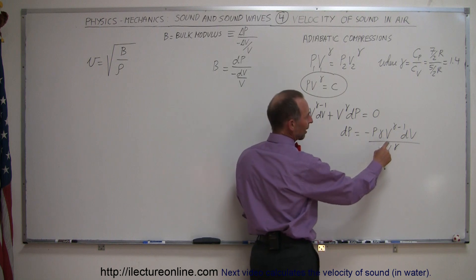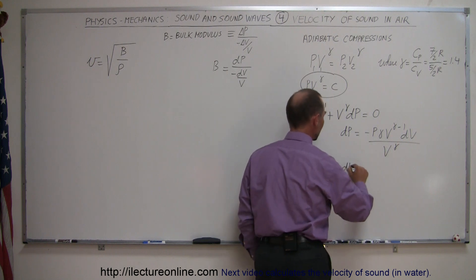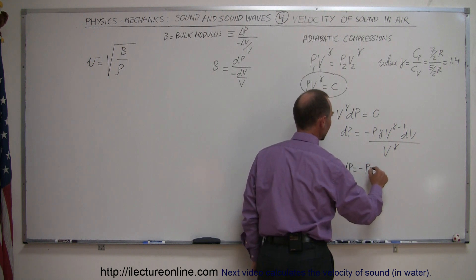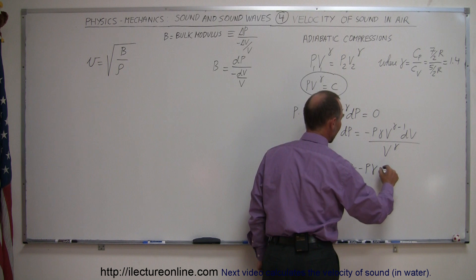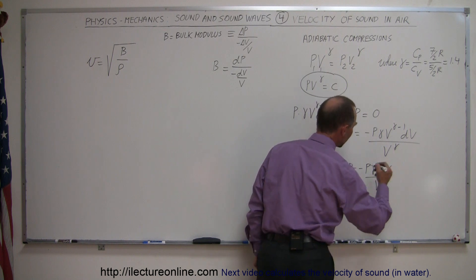Notice that if we have V to the gamma minus 1 divided by V to the gamma, the ratio of that is simply 1 over V, so we can say that DP equals minus P times gamma times DV divided by V to the first power.